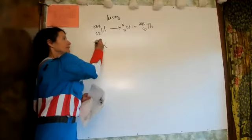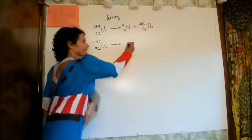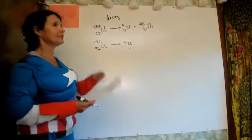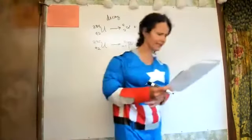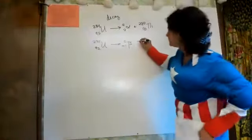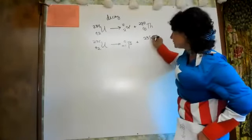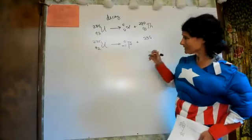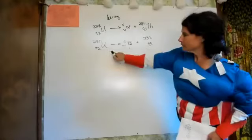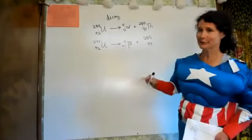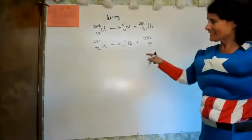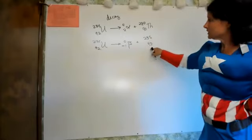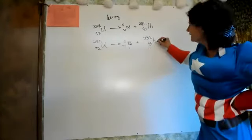Uranium-235 goes through beta decay. There is no change in the mass — only alpha particles change the mass. The atomic number actually goes up: negative one plus 93 gives us back 92. Beta decay was a neutron turning into a proton — the total mass did not change, but we created another proton.